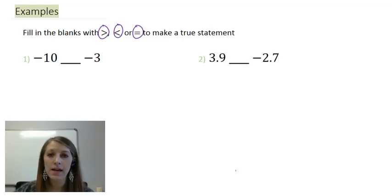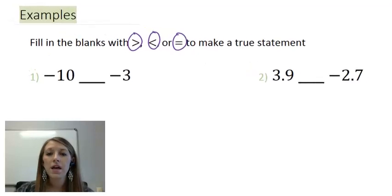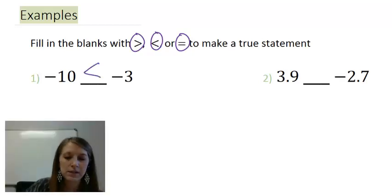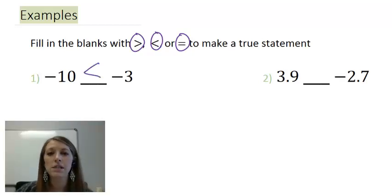Negative 10, how does that compare to negative 3 on the number line? Well, if I were to draw up the number line, negative 10 would be to the left of negative 3, meaning that negative 10 is smaller than negative 3. So the inequality symbol that I need to insert here is the less than inequality symbol.